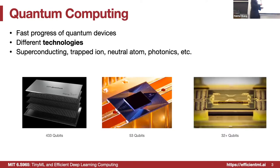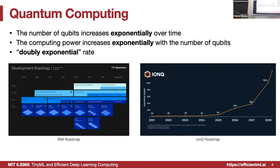First of all, we know that recently quantum computing devices are undergoing very fast progress. We have different technologies, and just several days ago IBM released the newest 433-qubit processor. The number of qubits is going up exponentially, and that's not just for superconducting but also for other technologies such as neutral-atom photonics quantum computers. The number of qubits is increasing exponentially over time — like a Moore's law in quantum computing — but the computing power is not just linear to qubit number; it's also exponential to the qubit count, so that is a double-exponential increase of computing power.